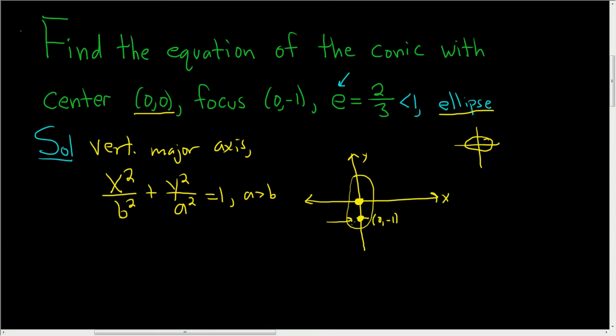This distance here is c, so c is equal to 1, and we know that the eccentricity is 2 thirds, and that's also equal to c over a.